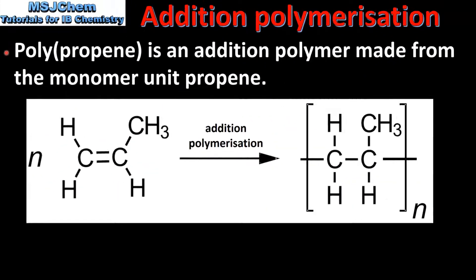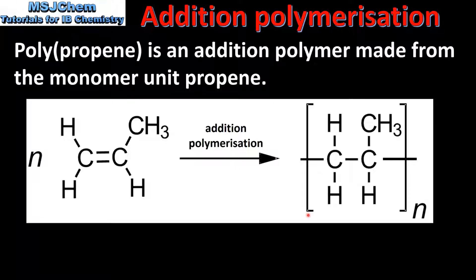The next example we look at is polypropene, which is an addition polymer made from the monomer unit propene. Here we can see the reaction of N number of molecules of propene to produce the polymer polypropene. And here we have the repeating unit of polypropene.